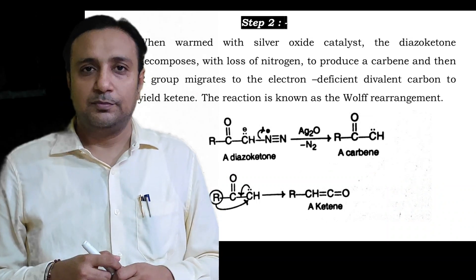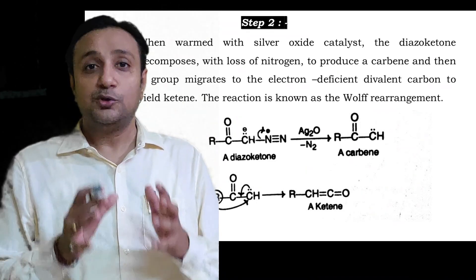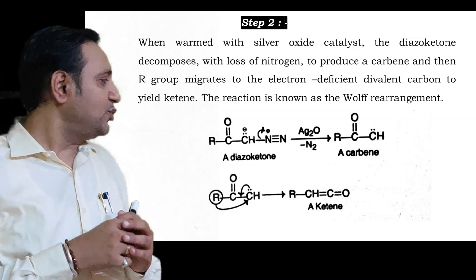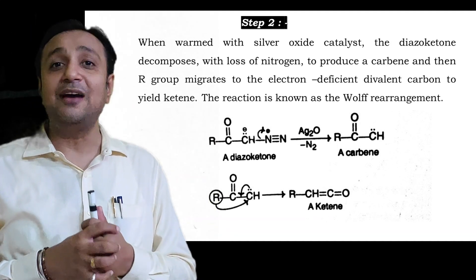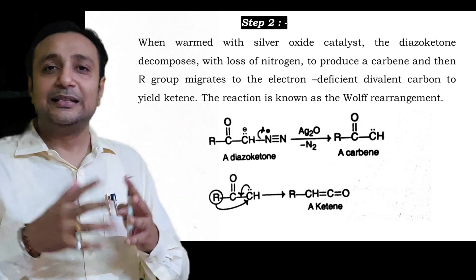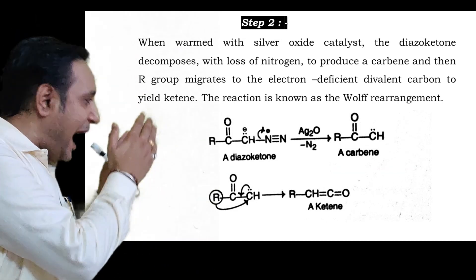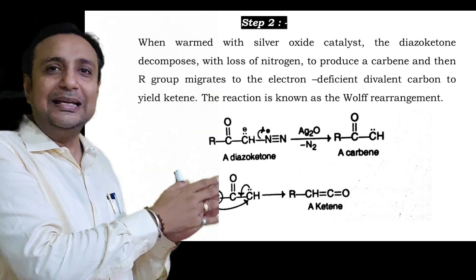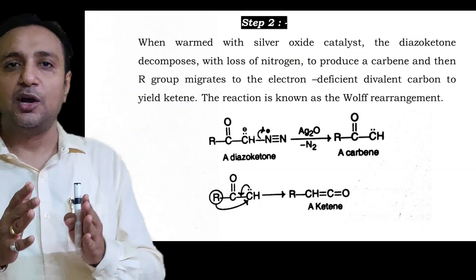Step 2 is the mechanism of the Wolff rearrangement — the most important step. In this step, alpha-diazo ketone when treated with silver oxide is converted into divalent carbene. When this divalent carbene undergoes rearrangement, it is converted into ketene. You can observe that the alkyl group migrates from the carbonyl carbon towards the carbon of the divalent carbene. This rearrangement is known as the Wolff rearrangement.